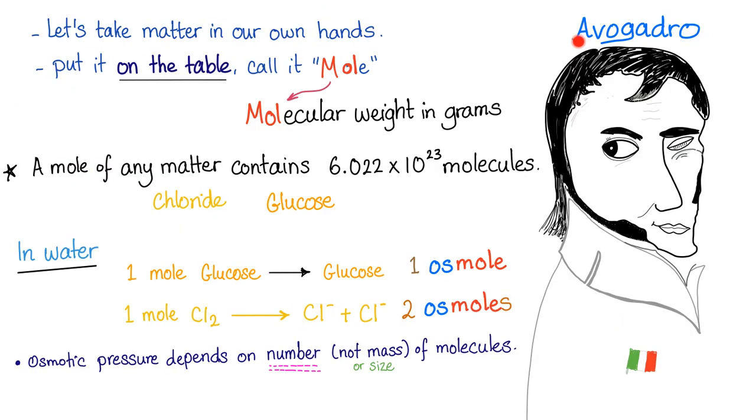Who's going to solve Houston's problem? A guy from Italy. Signore Avogadro. He's Italian, baby. He said, okay, doctors, I see your problem. I'm going to solve it for you. These atoms and molecules are BS. Let's take matter in our own hands, put it on the table, call it a mole. What is a mole, Signore Avogadro? It's the molecular weight in grams. By the way, a mole of any matter contains 6.022 times 10 power 23 molecules. So a mole of chloride, for example, contains 6 times 10 to the 23rd power molecules of chloride. How about glucose? A mole of glucose contains 6 times 10 power 23 molecules of glucose. We will call this number Avogadro's number. Grazie, Signore.